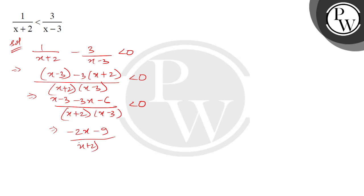By x plus 2, x minus 3 less than 0. Factoring out the negative, we get 2x plus 9 by x plus 2 into x minus 3 greater than 0.